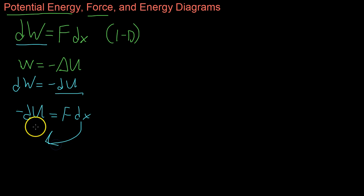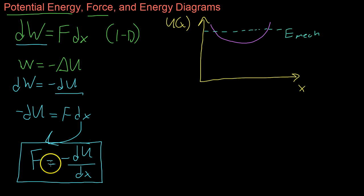Separating our variables and bringing down this dx, we get that force is the opposite of the derivative of the change in potential energy. So force is the derivative, or the opposite of the derivative, of the potential energy function, or it can also be interpreted as the slope.